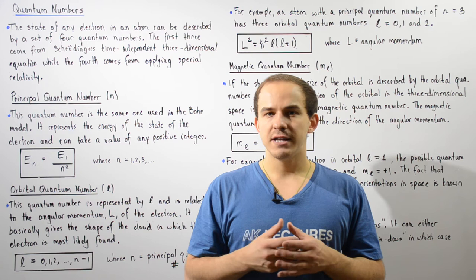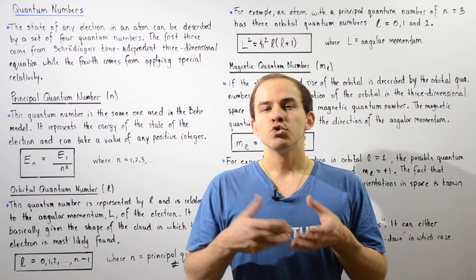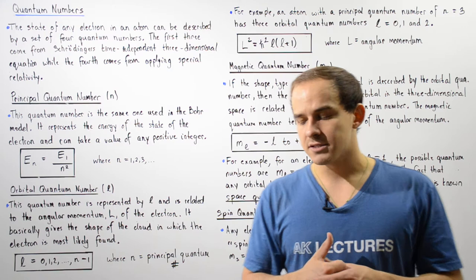The position or the state of any electron within any given atom can be described by using a set of four numbers we call the quantum numbers. The first three quantum numbers can be obtained by solving Schrödinger's time-independent three-dimensional equation, and the final quantum number is obtained by applying the special theory of relativity as discussed by Albert Einstein.